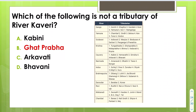Which of the following is not a tributary of river Kaveri? Tributaries of river Kaveri include Kabini, Hemavati, Shimsha, Arkavati, and Bhavani. The odd one out is Ghataprabha — it is a tributary of river Krishna.